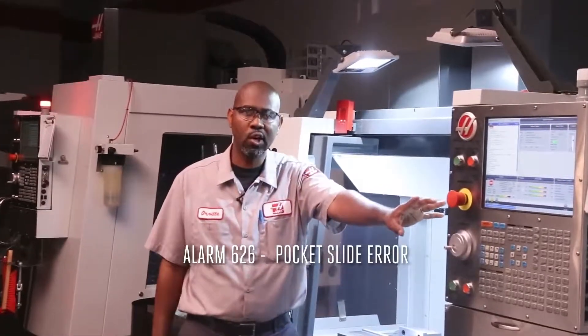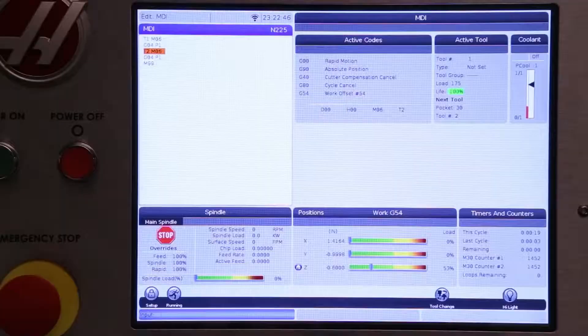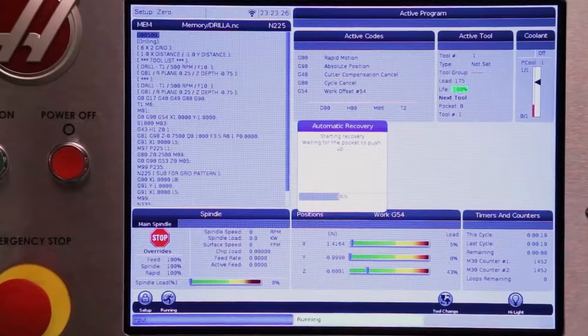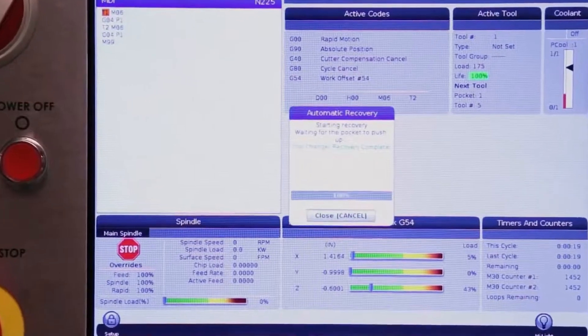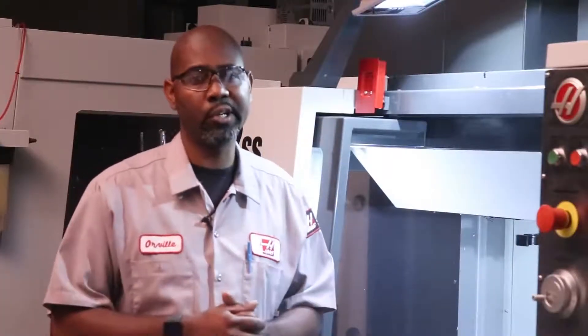Alarm 626 occurs when the tool pocket failed to reach the proper up and down location. Press the recovery button and follow the instruction to recover the tool change. Then command several tool changes to make sure the tool change is working correctly.